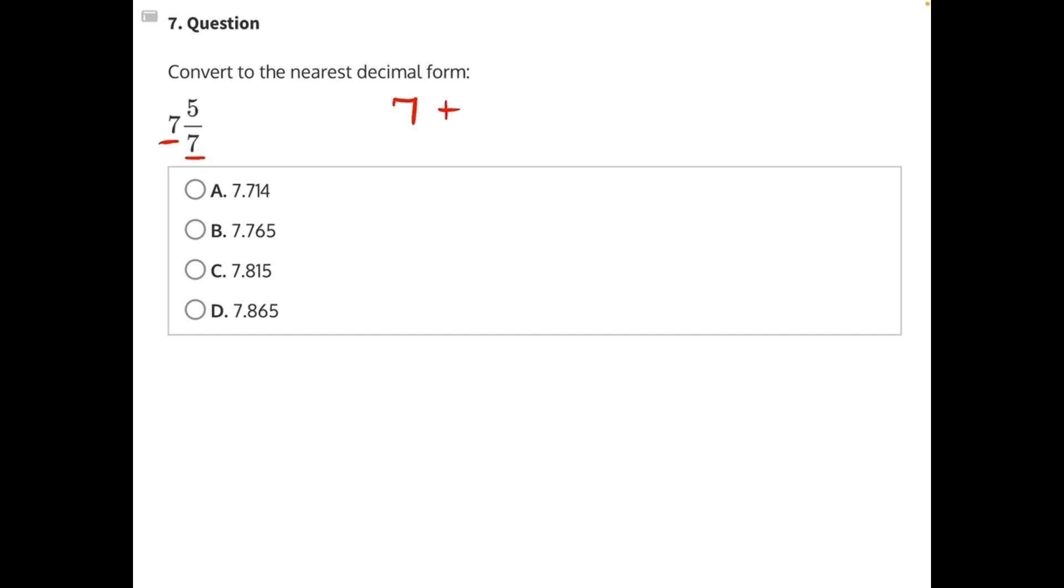This is the same thing as 7 plus 5 over 7. And now we can take this and find its decimal form by dividing 5 over 7. It's the same as 5 divided by 7. So we can set up a long division problem.